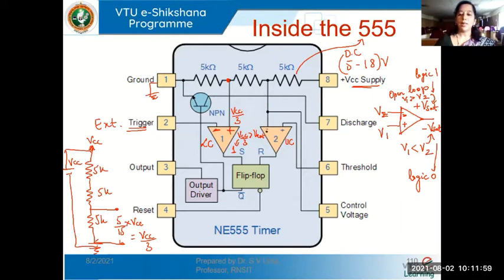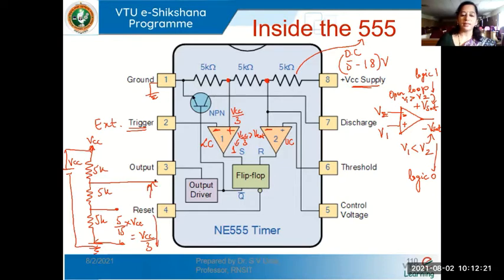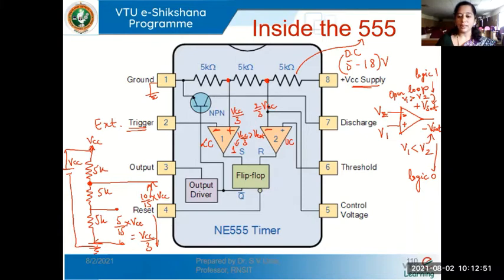Now for the upper comparator: the inverting terminal is connected to the second 5k resistor. The voltage at this point from ground, after two 5k resistors, is 10k divided by 15k into VCC, which equals two-thirds of VCC. So two-thirds of VCC is fixed at the inverting terminal of the upper comparator.